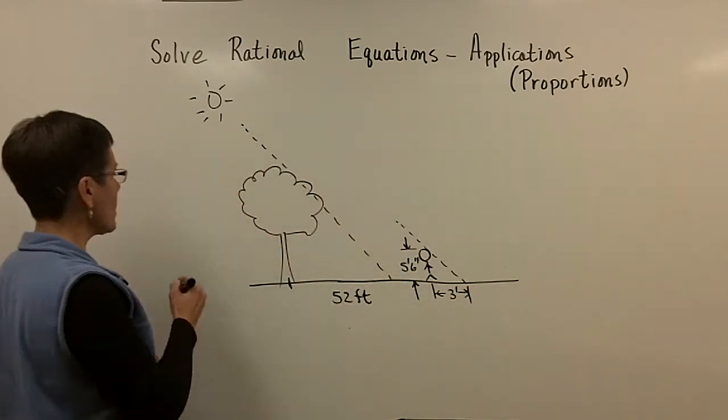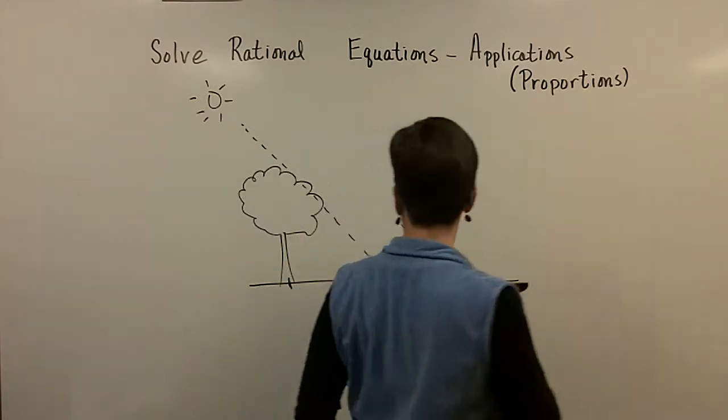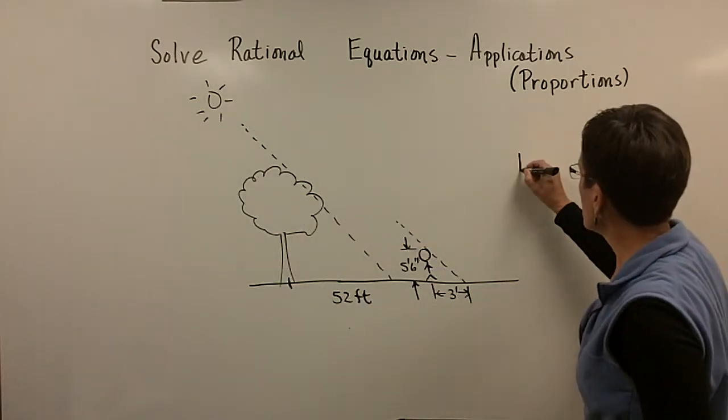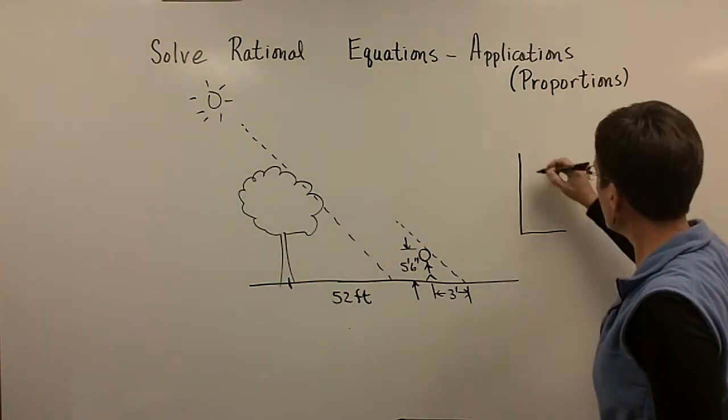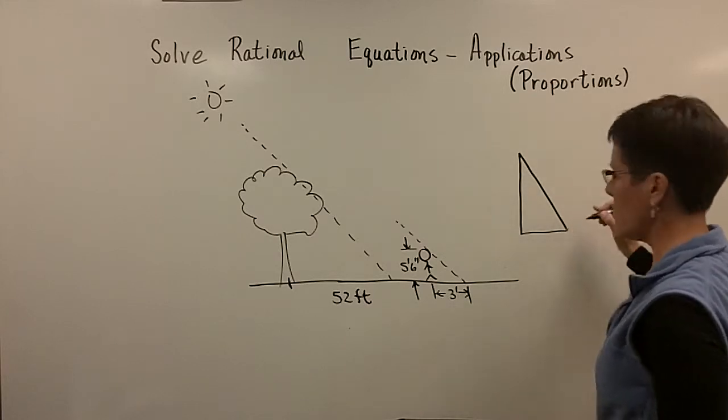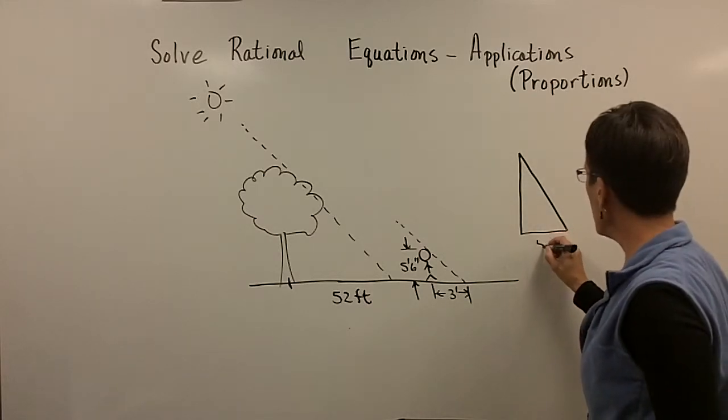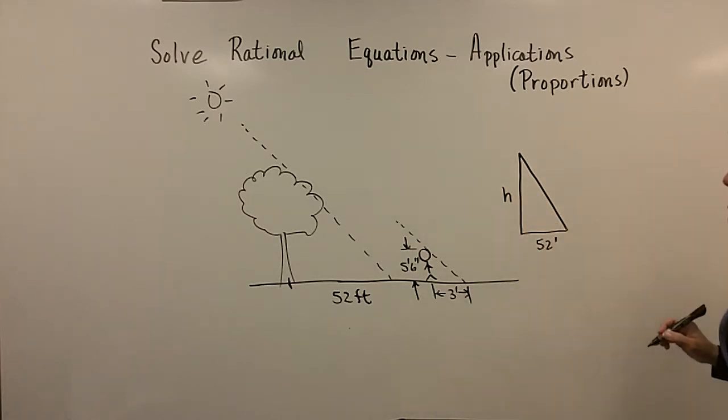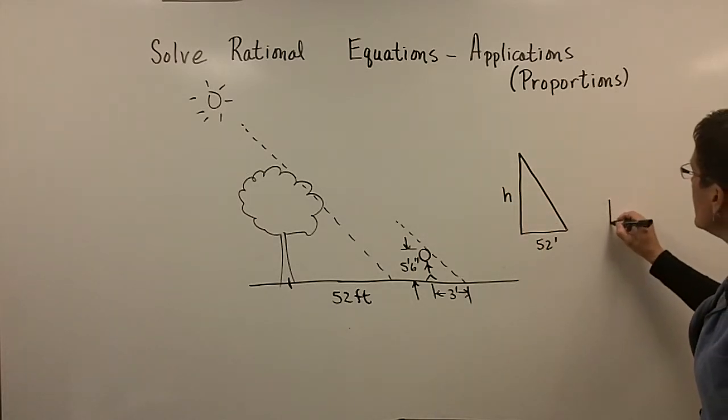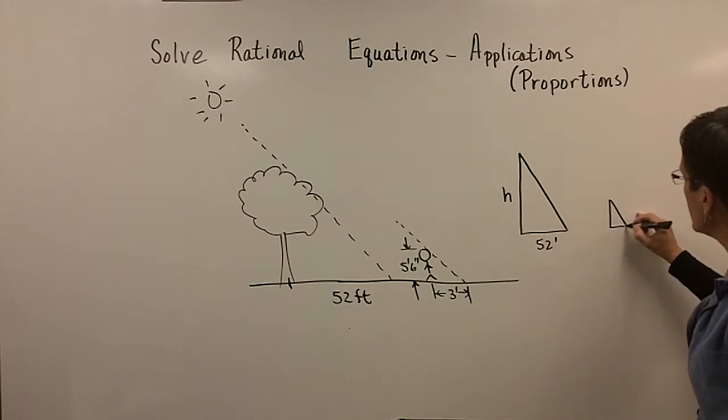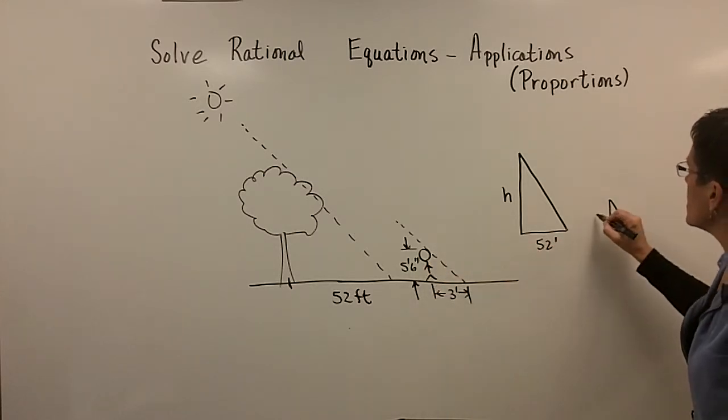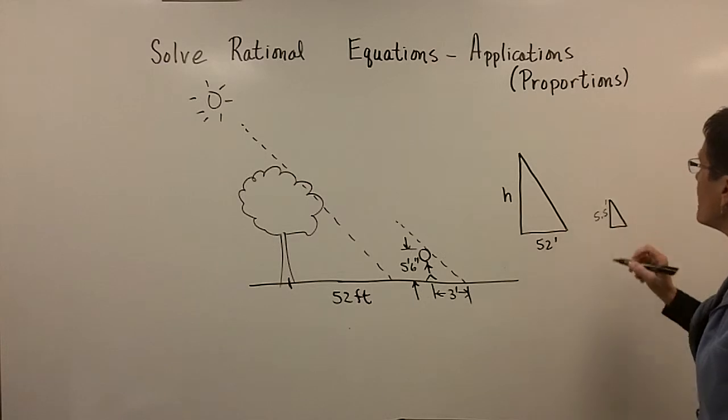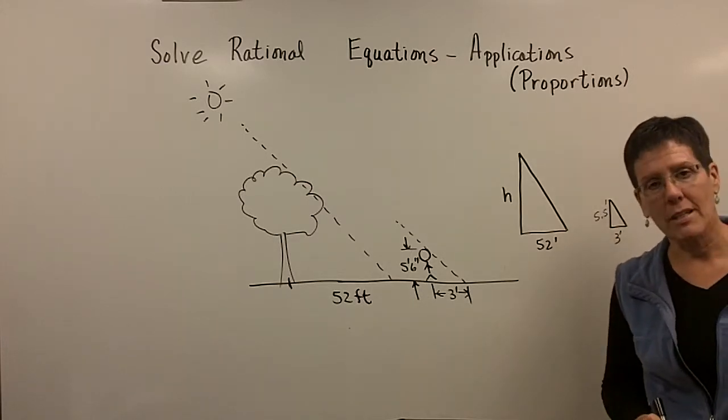So I have these two triangles. I'm even going to come over here and draw them a little bit easier to see. So I have a big triangle. They happen to have right angles because my lawn is flat. But this is 52 feet. And I wonder how tall the tree is. And then over here, I have a little itty beady triangle. And the person is five foot, six inches. So aren't they 5.5 feet tall? And their shadow is three feet.